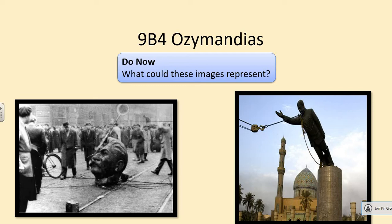The first poem we're going to look at is called Ozymandias — however you like to pronounce it. What I'd like you to do is have a look at these two images on the screen. Take a couple of minutes to really think about what these images could represent. So pause the video, have a think, and then restart when you've come up with some ideas.